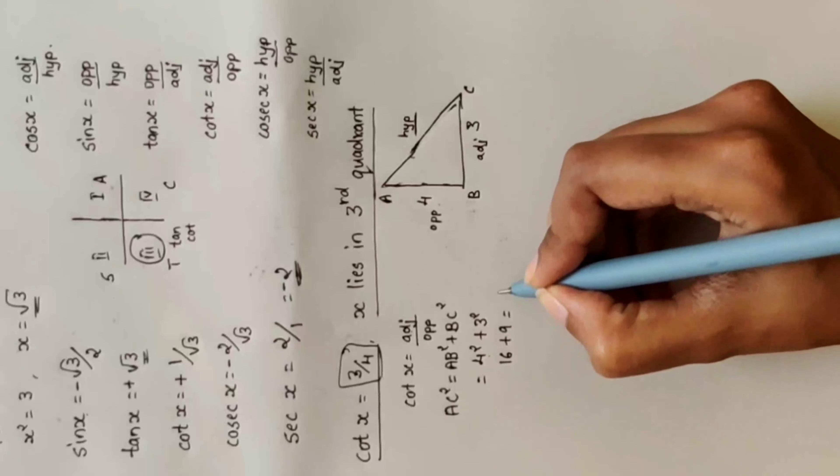Cos x = adjacent divided by hypotenuse = 5 divided by 13.